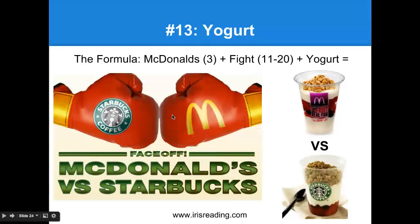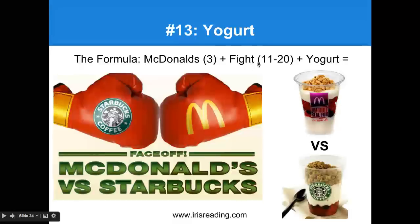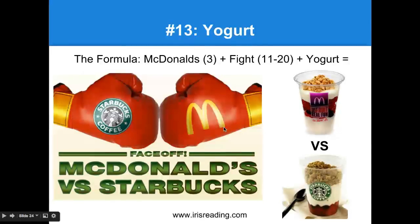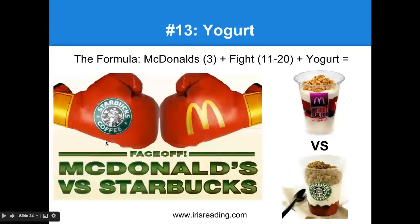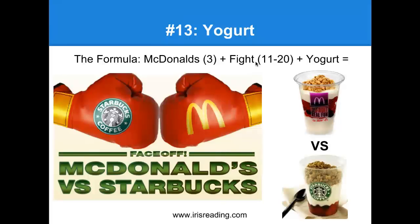Number 13 is yogurt. The formula: we take McDonald's (which is three) plus fight (because we're in 11 through 20) plus yogurt. We have a showdown — a face-off between McDonald's versus Starbucks over who has the better yogurt parfait. We can picture Ronald McDonald from McDonald's fighting the Starbucks mermaid. They're fighting over who has better yogurt. The way we'll remember: McDonald's is three from 13, and we know there has to be a fight — oh yeah, McDonald's and Starbucks, they're fighting all because of yogurt.